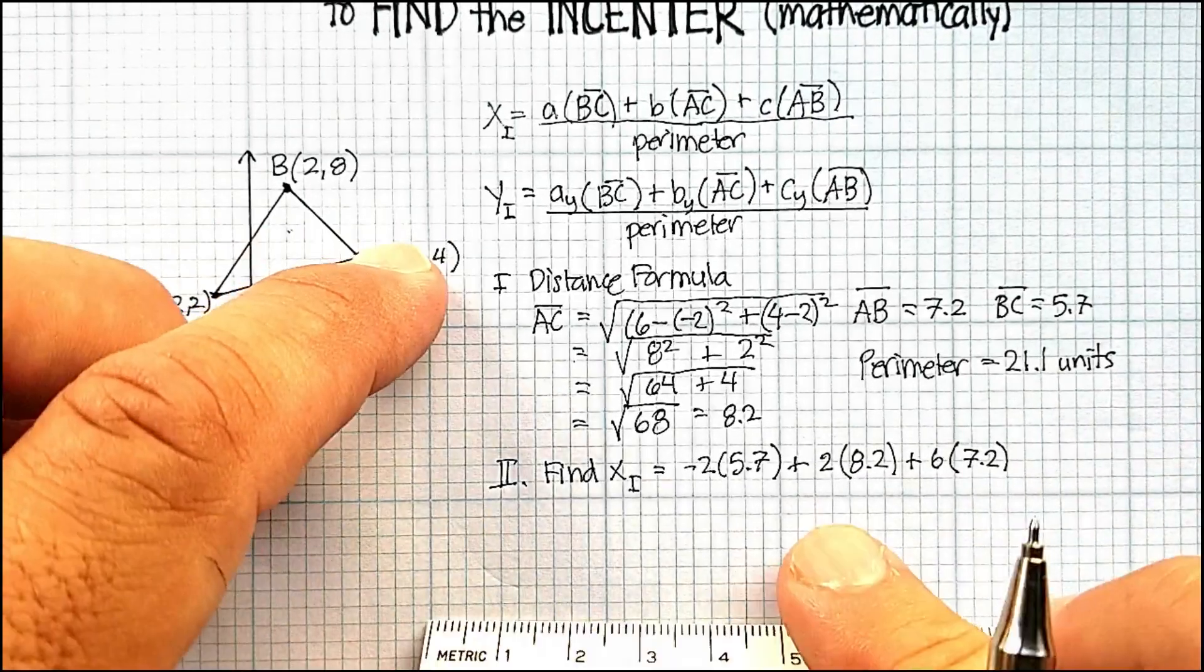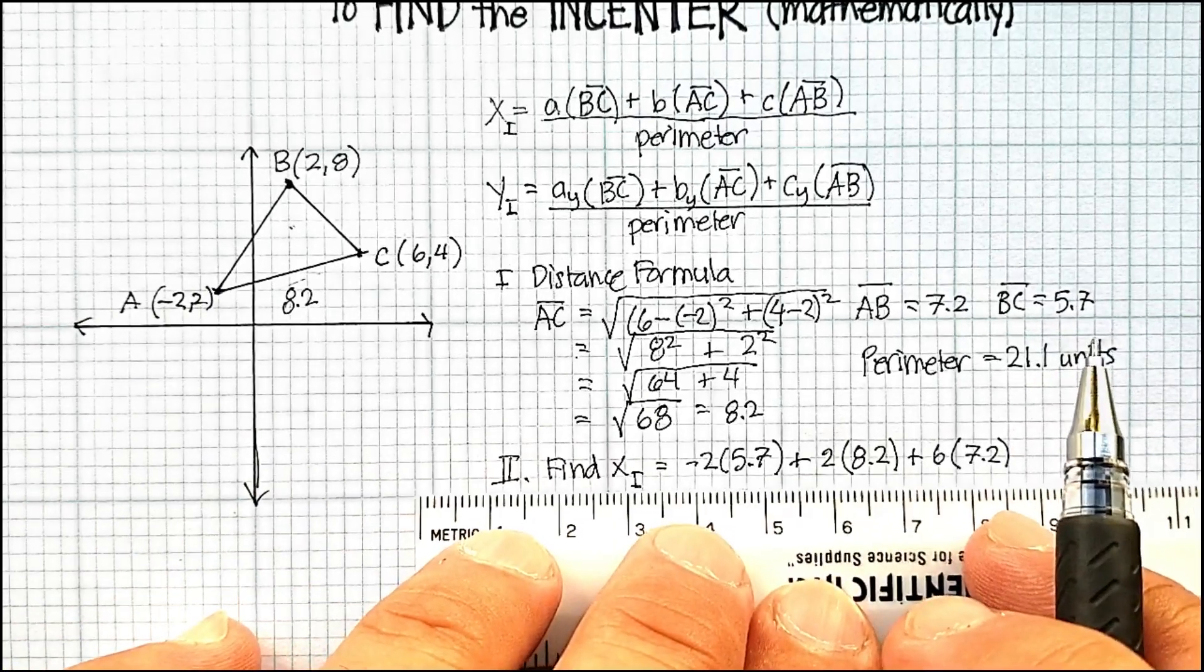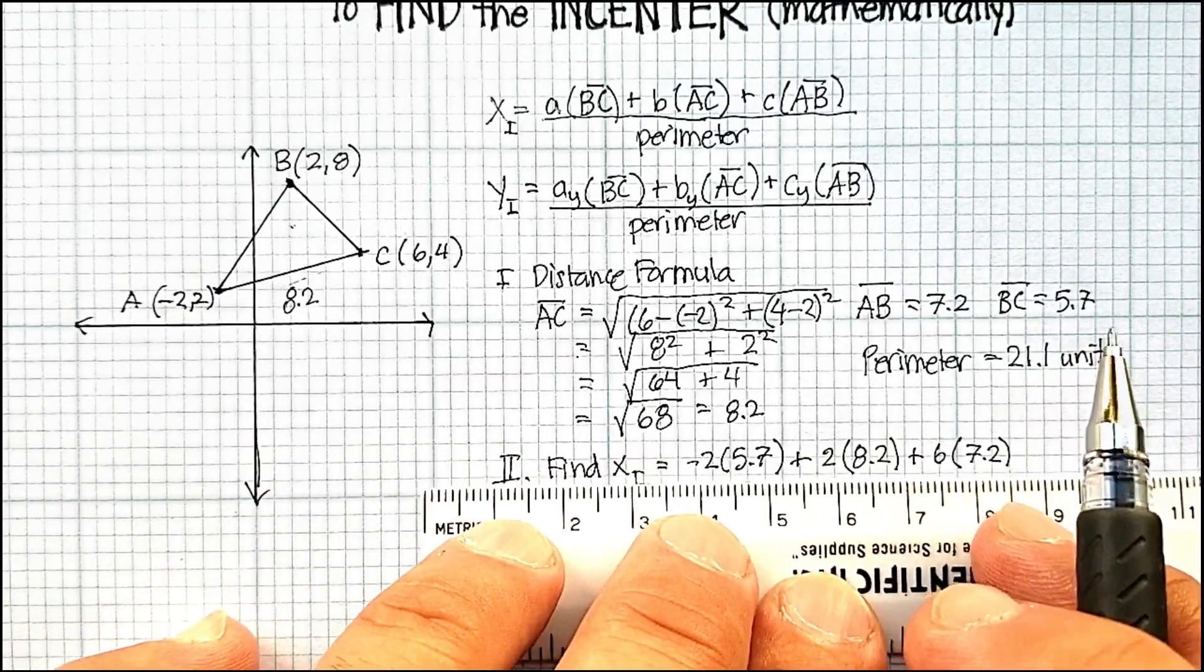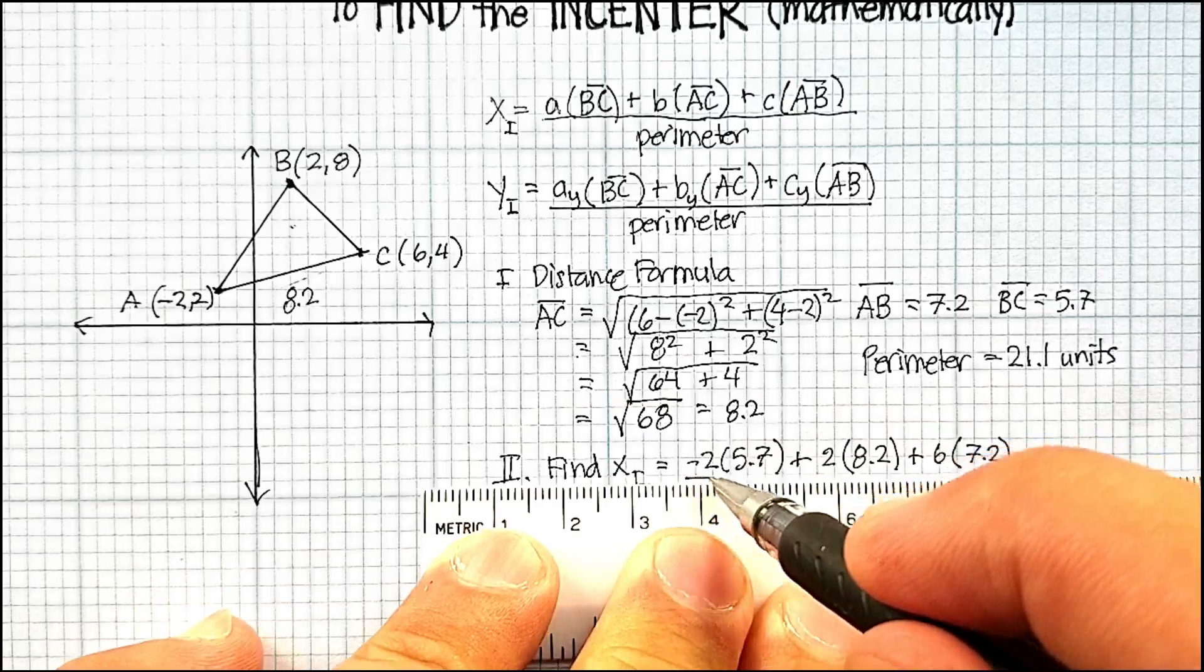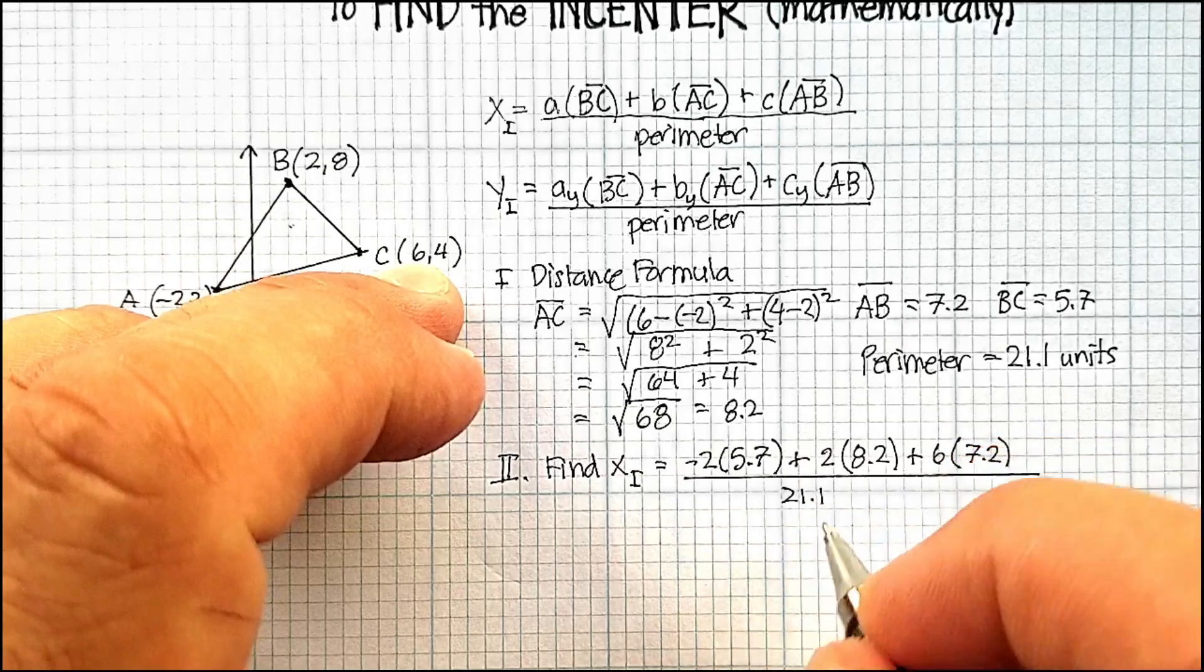All divided by 21.1, which is the perimeter that I just figured out in the previous, what I'll call, paragraph. This is a mathematical paragraph. Divide by 21.1.